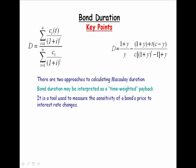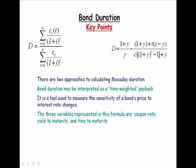It's a tool used to measure the sensitivity of a bond's price to interest rate changes. And there are three variables in the formula that are used to determine bond duration. They are the coupon rate, the yield to maturity, and the time to maturity.